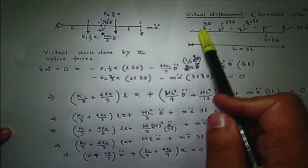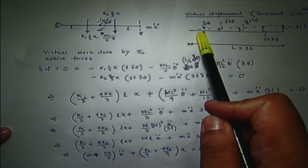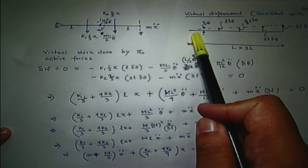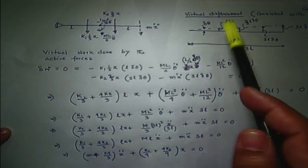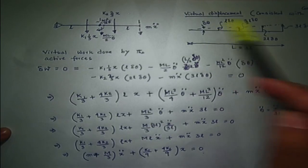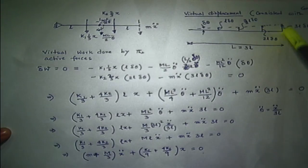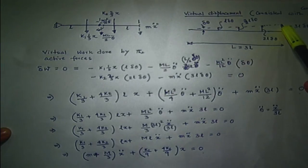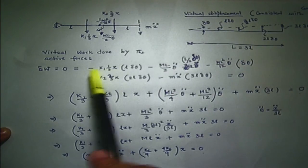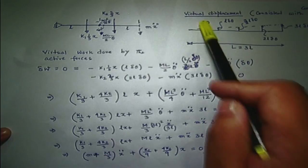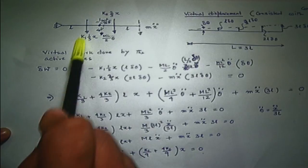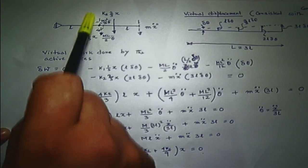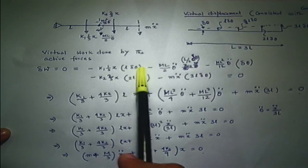We give a virtual displacement delta theta. Remember delta theta is artificial and has no relationship with the real displacement. We can calculate the virtual displacement at each location where forces interact and get the work done for each force. The work done by this force equals K₁ times (one-third of x·L) times delta theta.